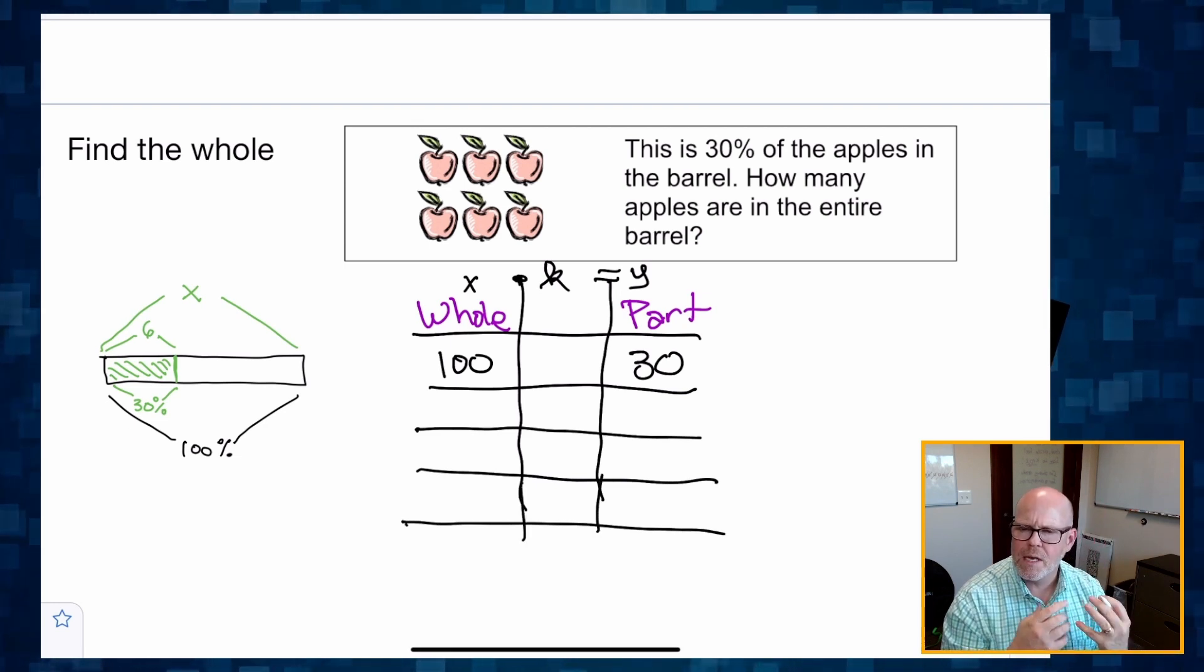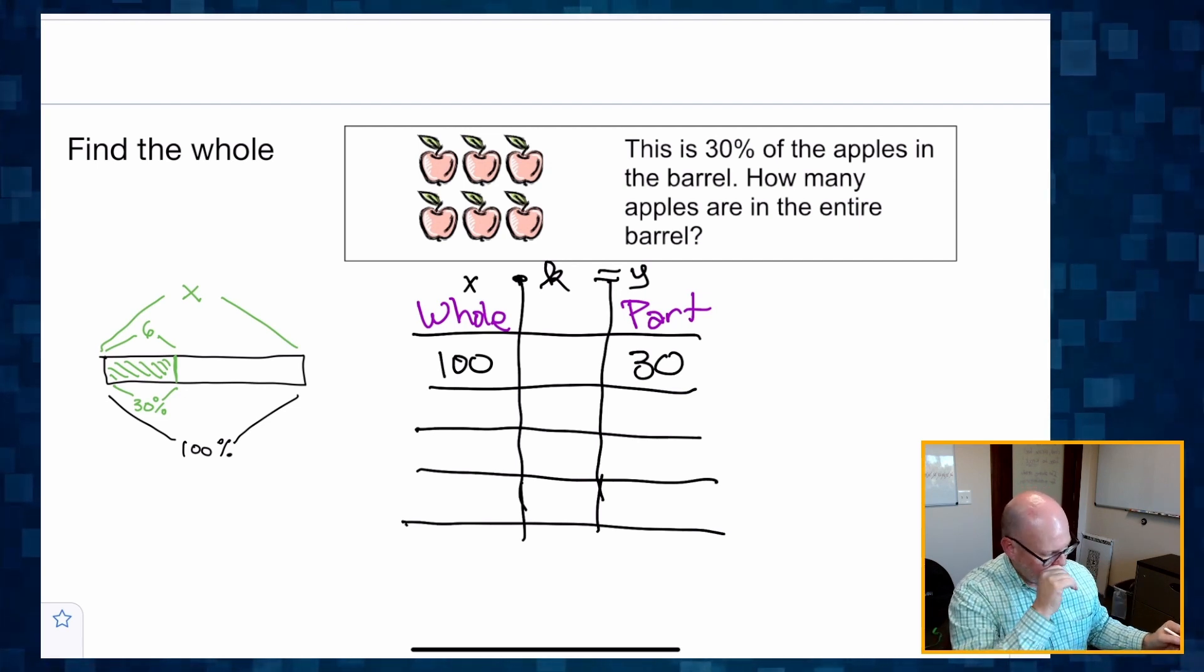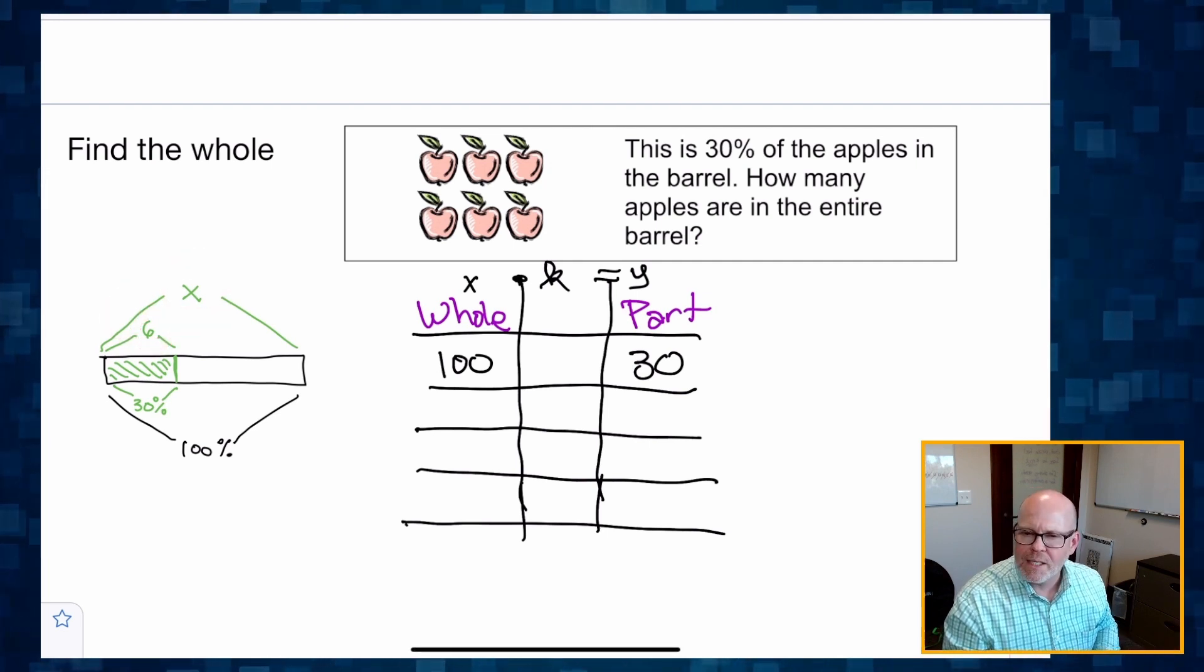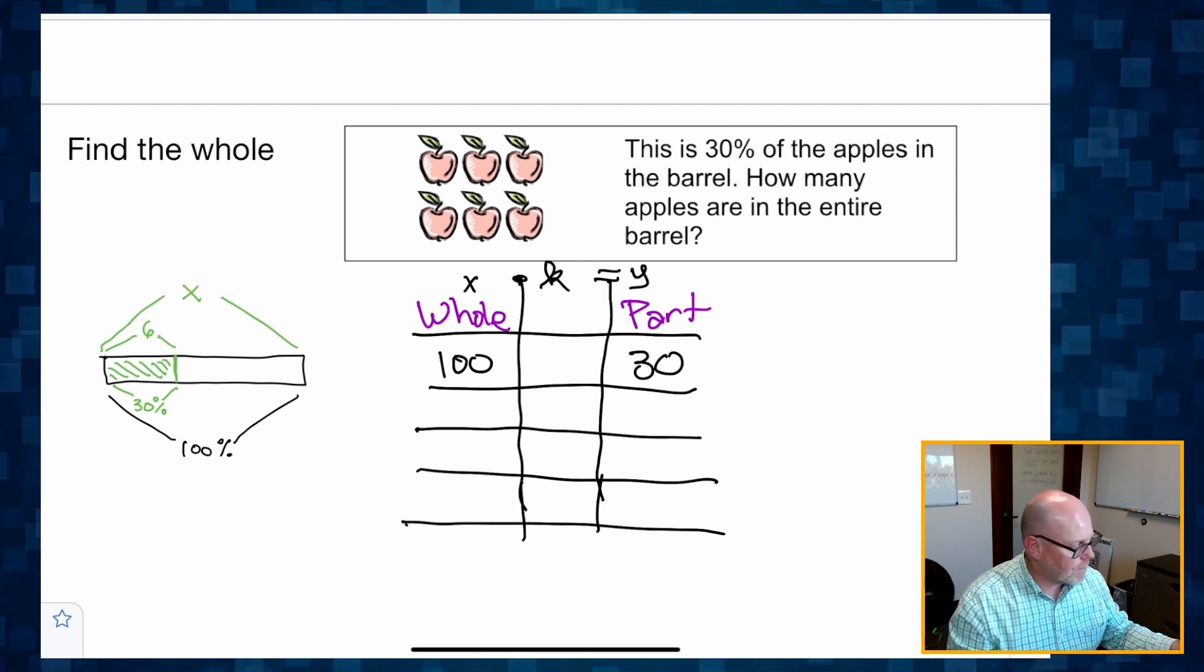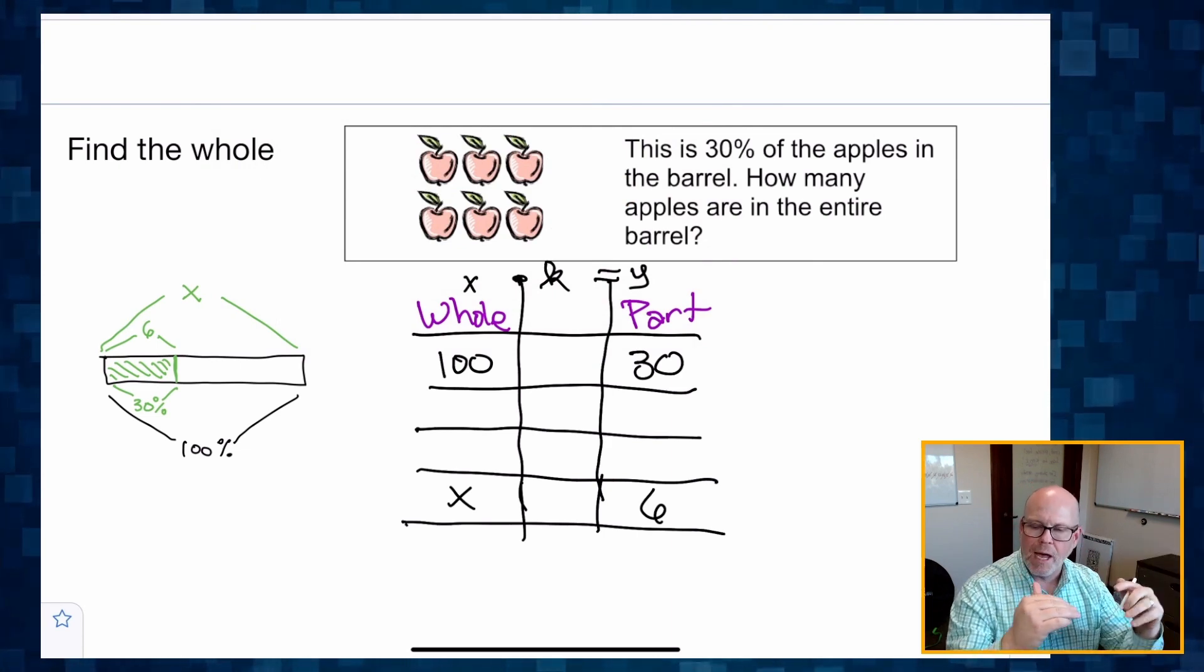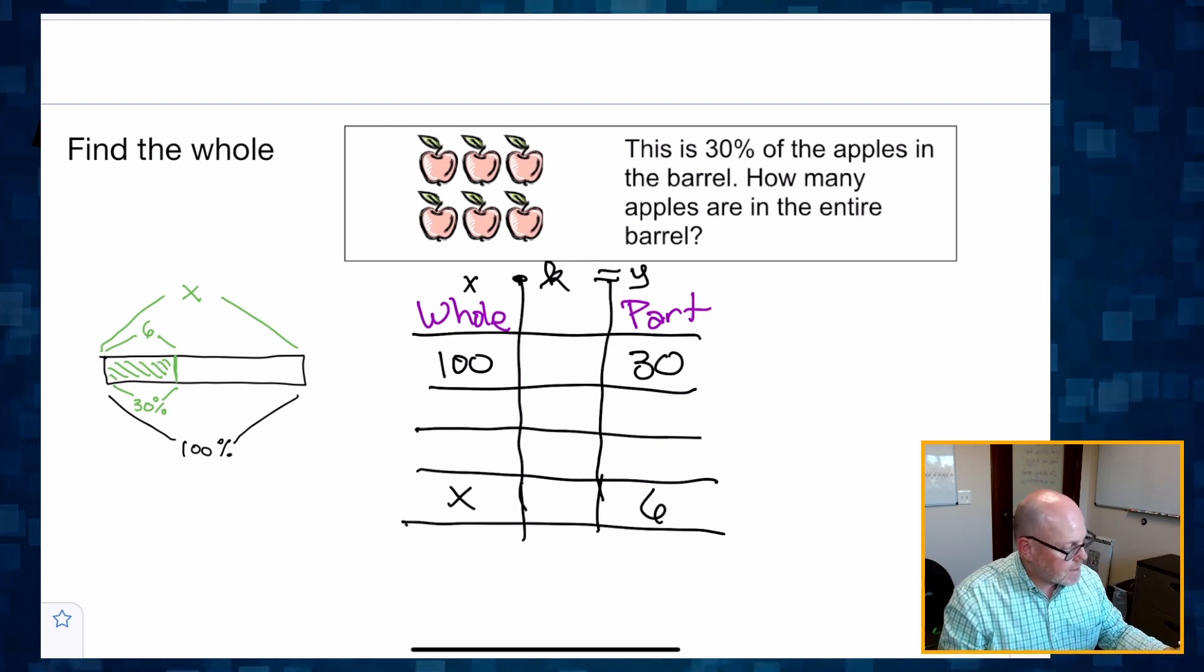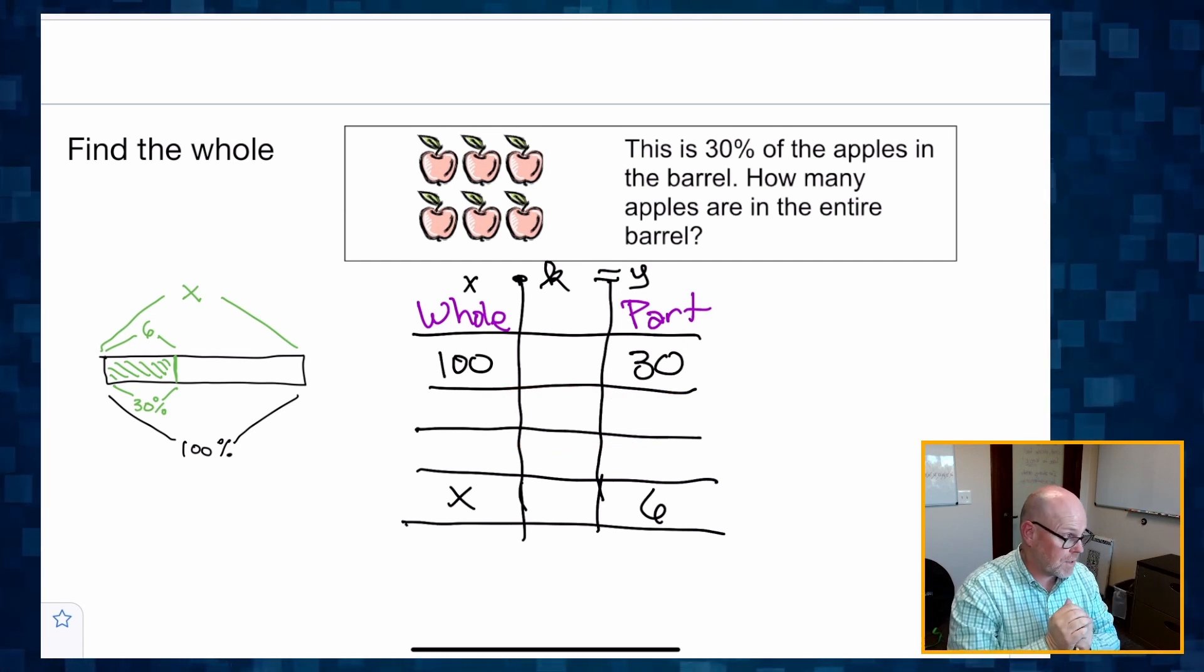And then what's another ratio that we can see in our story? Well, we've got a six and an X up here. And we can see that six represents the part and X represents the whole. So we can fill that in. And so we've got X represents the whole and six represents the part. So now we have a table with some equivalent ratios plus some extra lines for us to use as many additional equivalent ratios as we want.